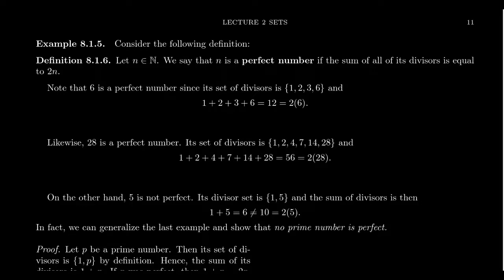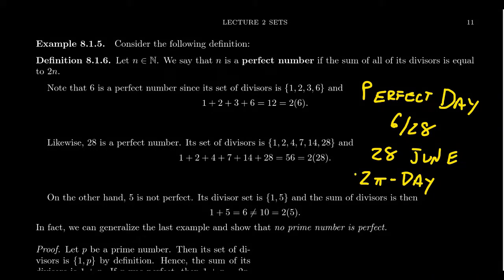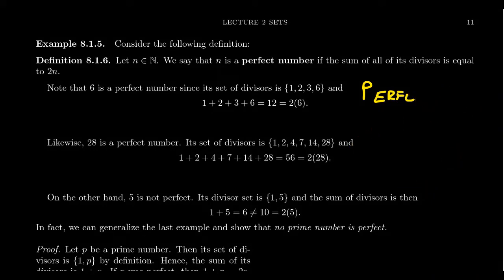An interesting mathematical holiday: if you follow the US date format, June 28th could be called 'Perfect Day,' because six and twenty-eight are the first two perfect numbers. June 28th is also sometimes referred to as 'two pi day,' because 6.28 is approximately 3.14 times two. Much like on pi day you eat a pie to celebrate the number pi, on perfect day or two pi day you eat two pies — which would be just perfect.